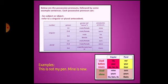Below the possessive pronouns are some example sentences. Each possessive pronoun can be subject or object and can refer to a singular or plural antecedent. Used before nouns: singular — my, your, his, her, its; plural — our, your, their. Used alone: mine, yours, his, hers, its, ours, yours, theirs. Example: 'This is not my pen. Mine is new.' Here, 'my' is used as a possessive adjective, while in the second sentence 'mine' stands for 'my pen' and is used as a pronoun.